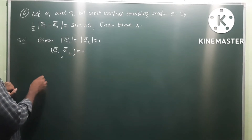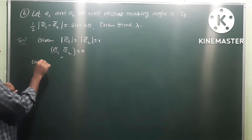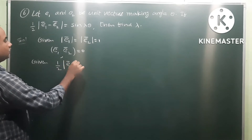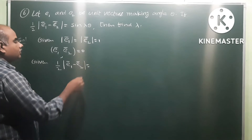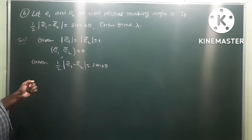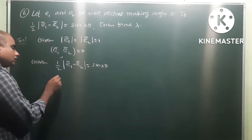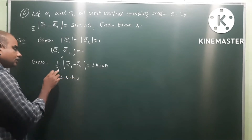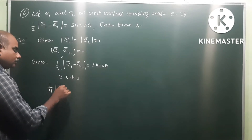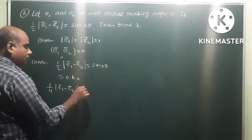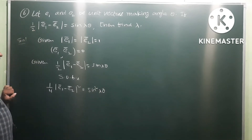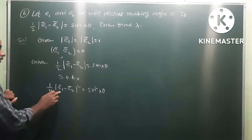Given condition: half modulus of e1 minus e2 is equal to sin(lambda*theta). Now squaring on both sides: 1/4 times modulus of (e1 minus e2) whole square is equal to sin squared(lambda*theta).